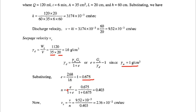Using the formula n = e / (1 + e), we substitute e = 0.675: n = 0.675 / (1 + 0.675) = 0.403, which is approximately 40%. We can now find the seepage velocity: vs = v / n = 9.52 × 10⁻³ / 0.403 = 2.36 × 10⁻² cm per second.